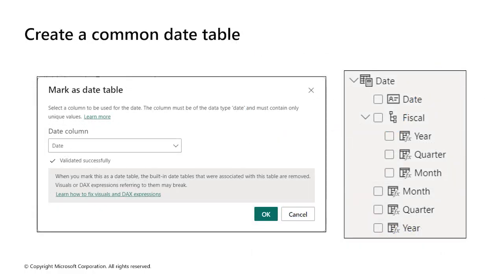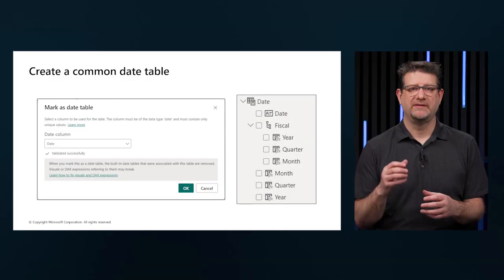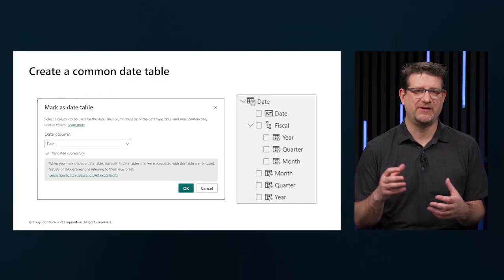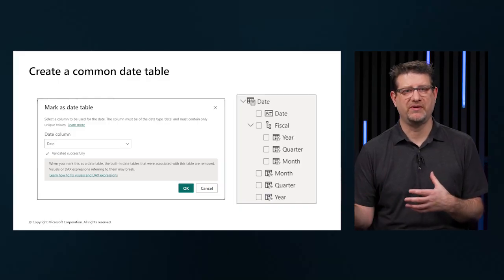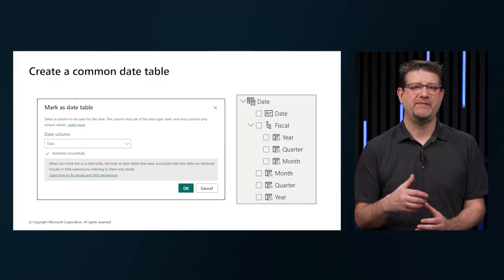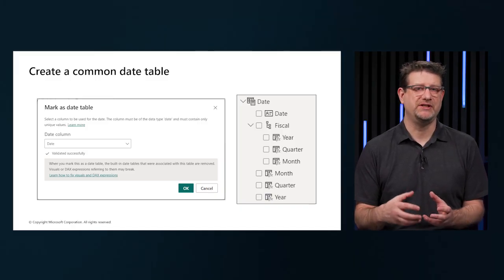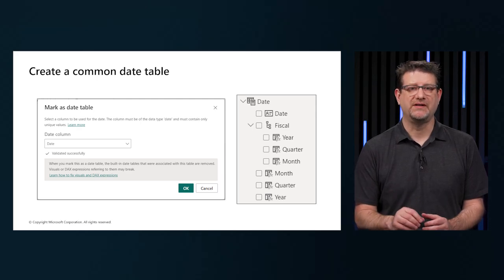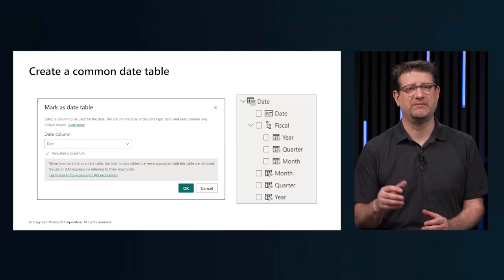During Power BI report creation, it's often necessary to perform calculations on date and time. To effectively analyze data over time, creating a date table is crucial. The table provides the necessary formatting for time-oriented values and allows businesses to track performance over months, quarters, fiscal years, and more. Power BI includes an automatic date-time feature that generates predefined calculated columns for day, month, quarter, and year. However, these columns may not meet specific requirements or can unnecessarily increase model size.